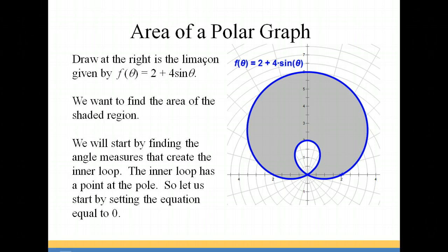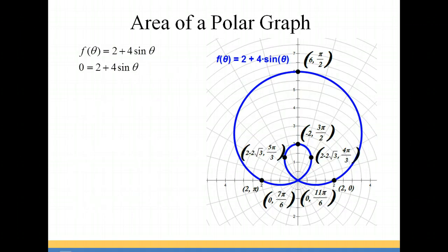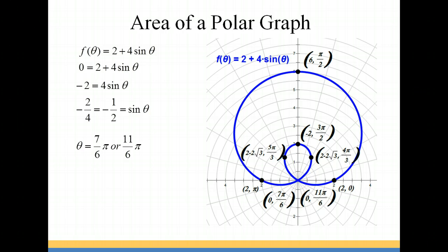In order to find that area, we must first find what angle measures form the inner loop. Since the inner loop has a point at the pole, we're going to set our equation equal to 0 and solve for our angle measure. So we have 0 equals 2 plus 4 sine theta, or negative 2 equals 4 sine theta, which means the sine of theta is negative 1 half. So our angle measures must be at 7π/6 or 11π/6.